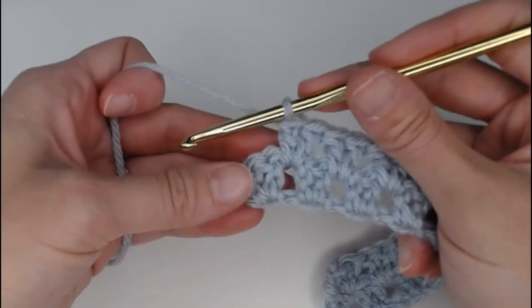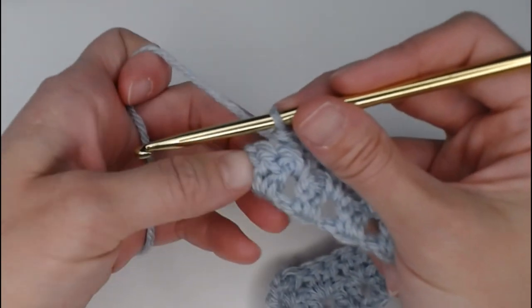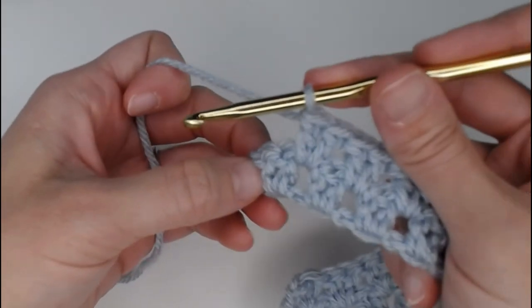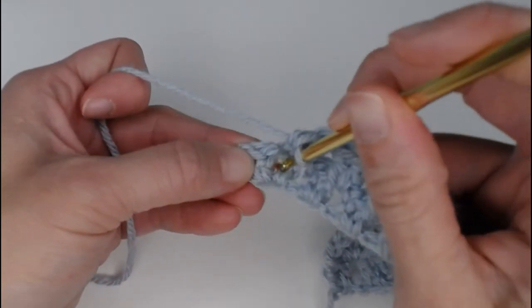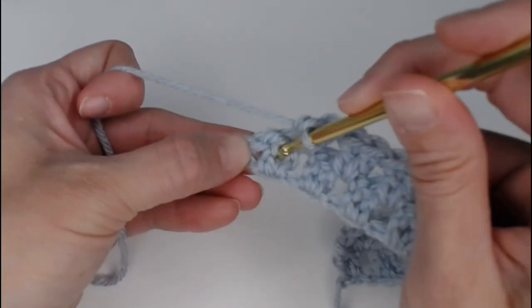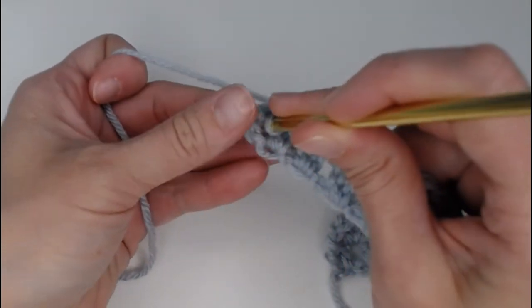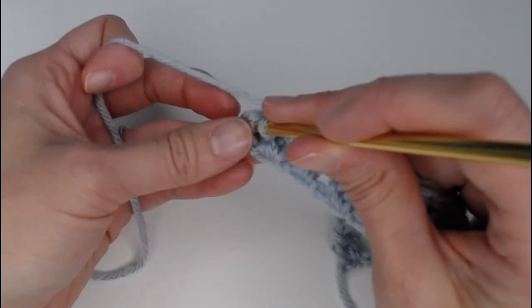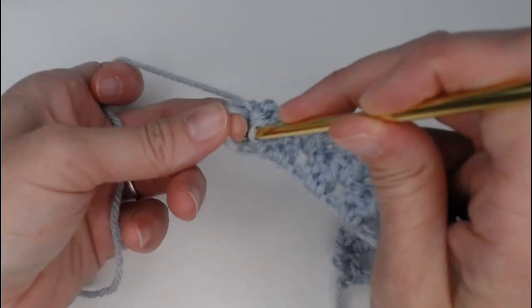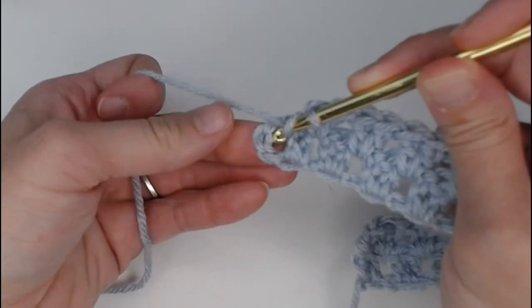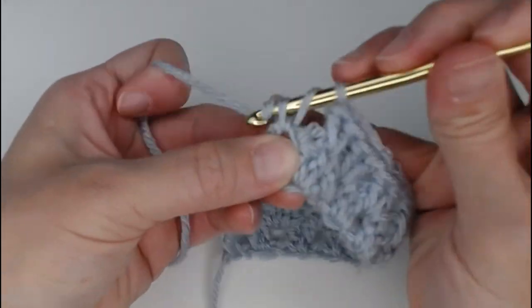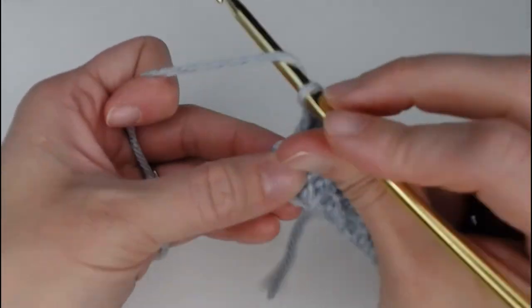Great job guys! Okay, we have reached the end of row 2. We are actually going to be putting our last 2 double crochets. We are going to skip this double crochet, skip that double crochet, and what you will see are those foundation row chains, the turning chains that we used to get onto row 1. We are actually going to put our 2 double crochets in that spot right there to finish off row 2.